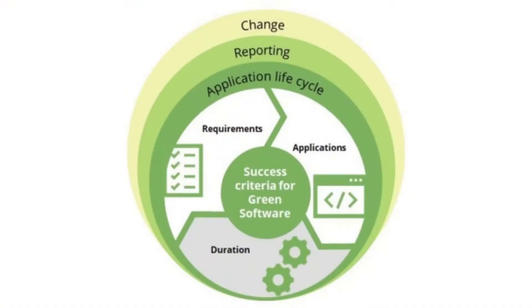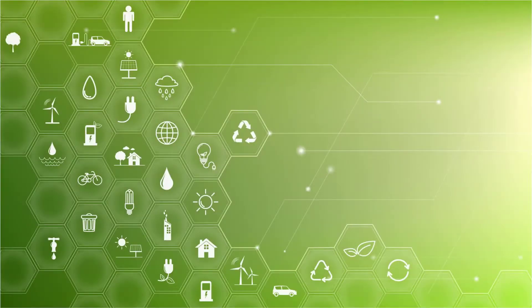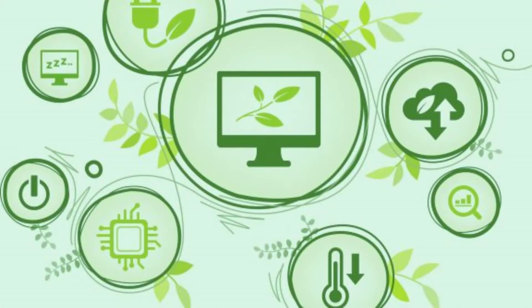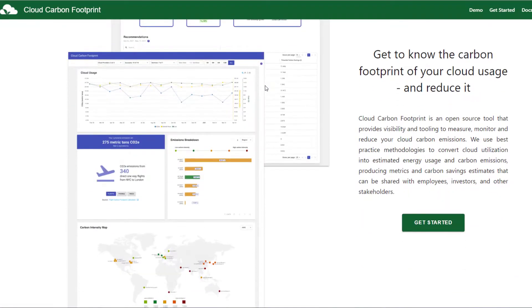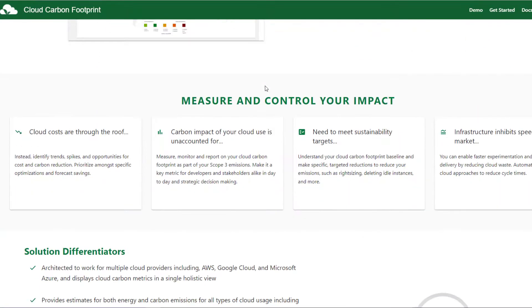What is green software engineering, and can you give us an example of a software that developers can use to code green softwares? Green software engineering is like the application of climate science to software. In the same way that we measure CPU and GPU usage of our applications, it's now about how do we measure the amount of carbon that our software emits. Something you could use would be the Cloud Carbon Footprint Calculator, which can measure the amount of carbon in your cloud. There are many other tools available as well. A green software engineer is the engineer of the future.